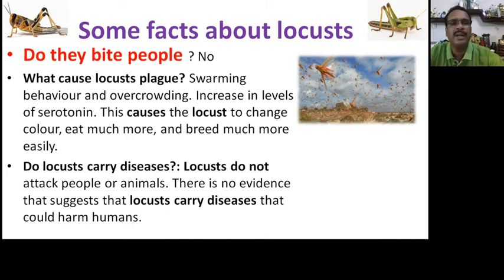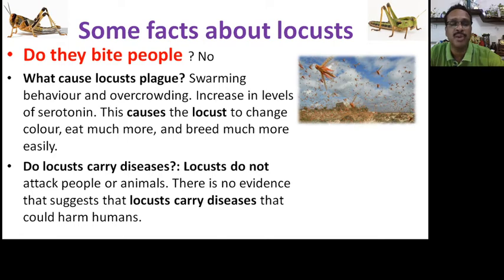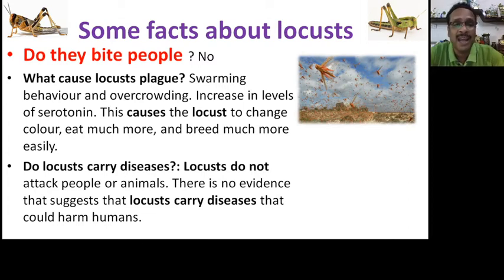What causes a locust plague? The swarming behavior and overcrowding of locusts is known as a locust plague. Increasing levels of serotonin — a substance that makes them socialize more quickly — causes locusts to change color, eat much more, and breed more easily. They become gregarious, form groups, and in large numbers start moving in what we call a swarm.